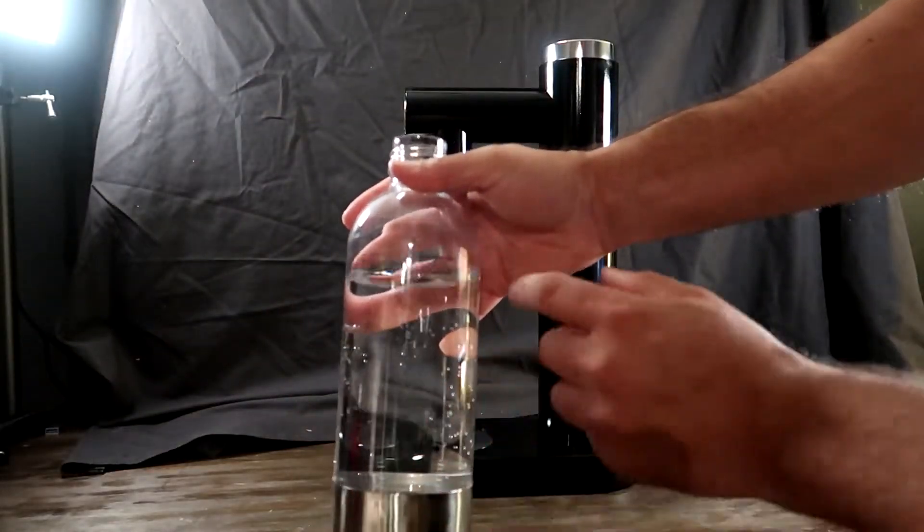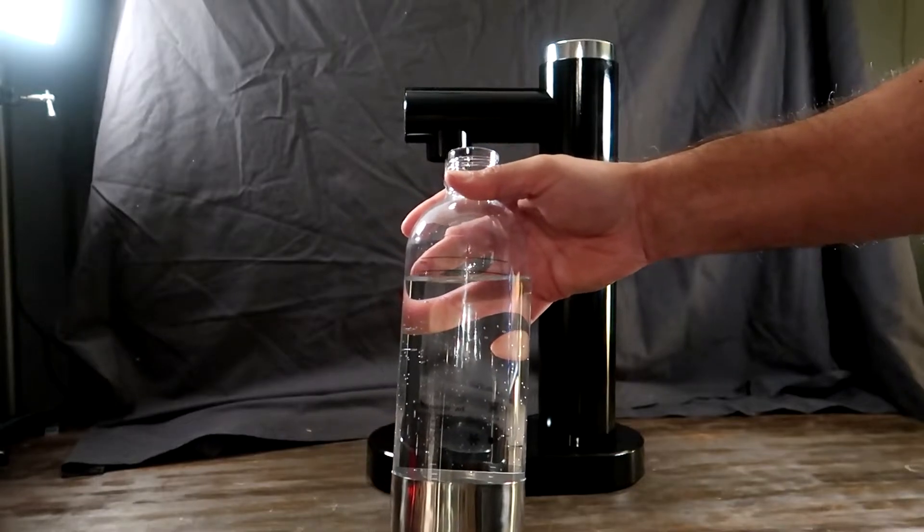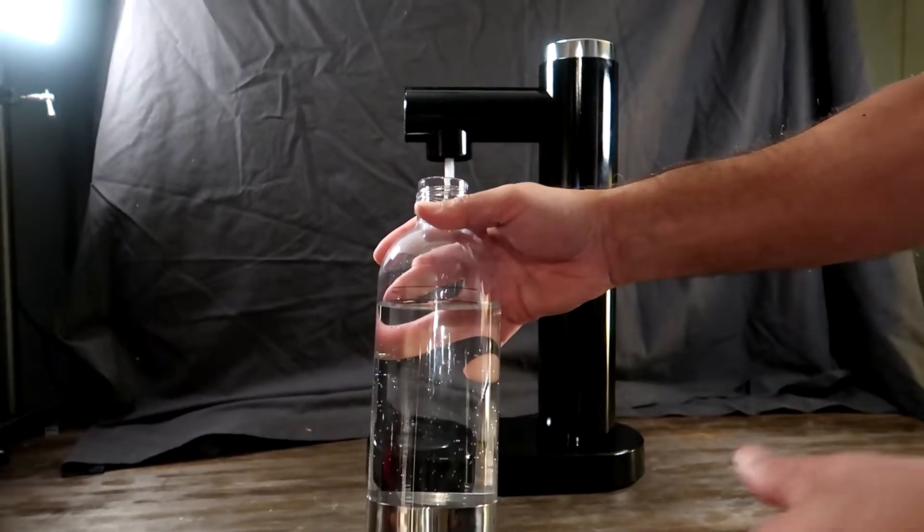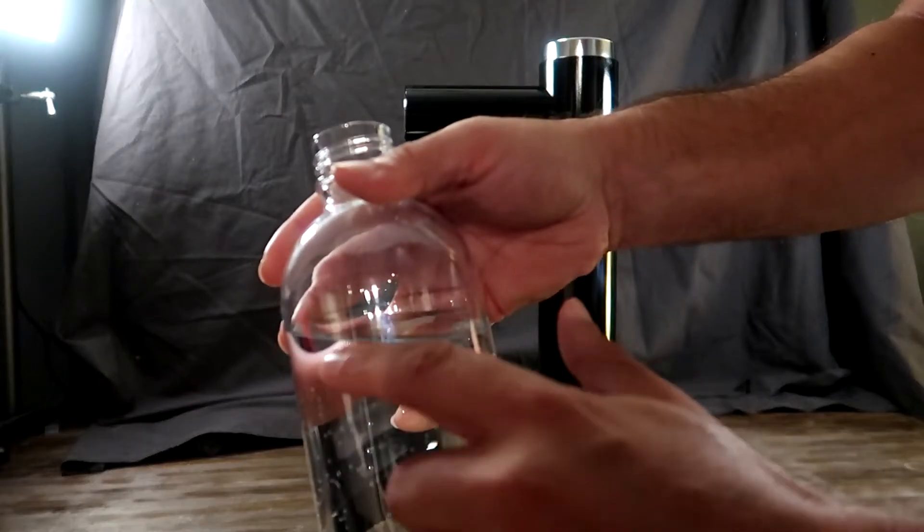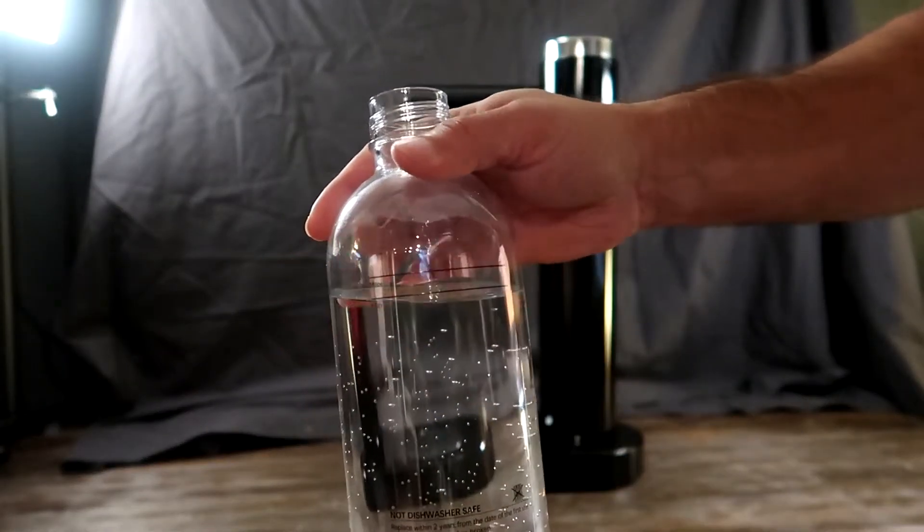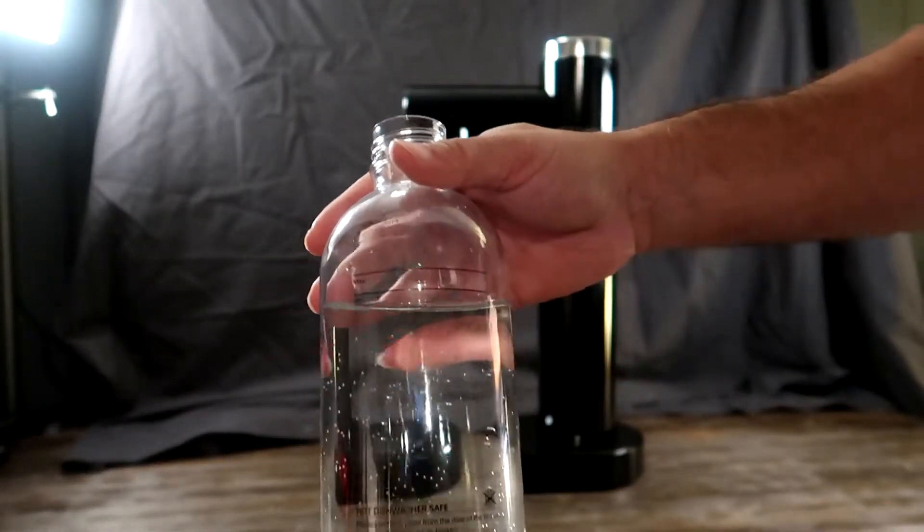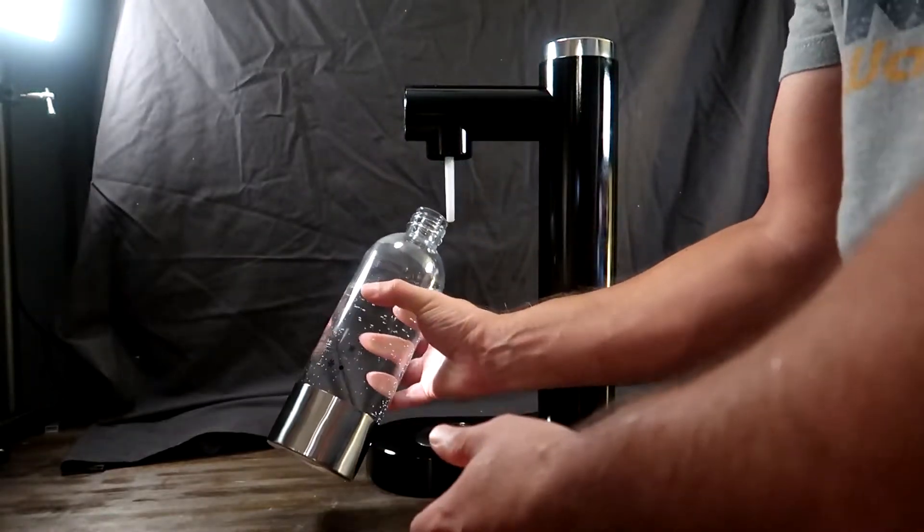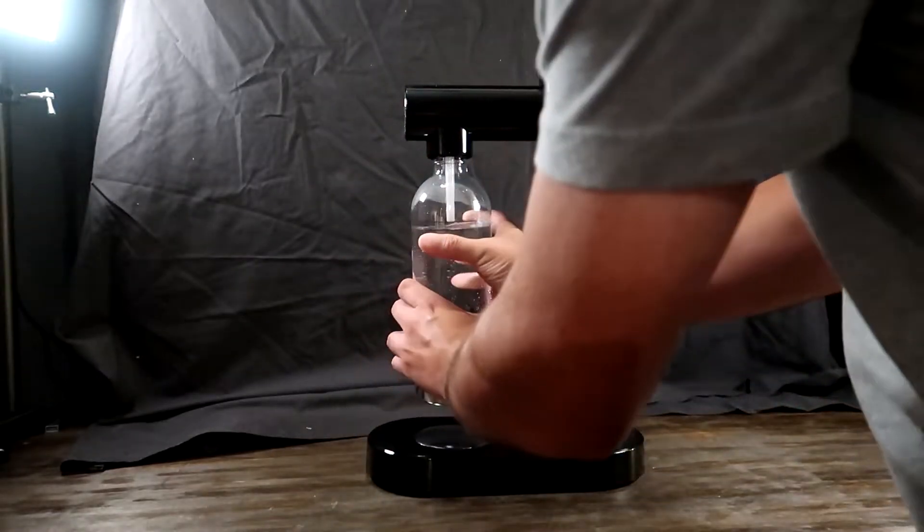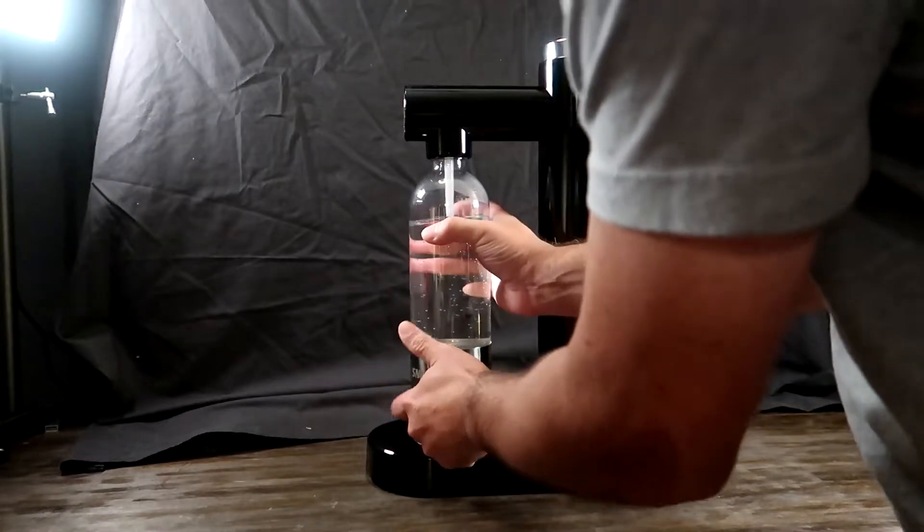Don't fill up the bottle all the way—it has easy-to-read lines showing where to fill. You don't want to carbonate warm water; you want to carbonate chilled water. And all you need to do is hand-tighten again.